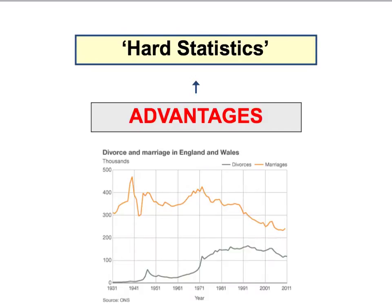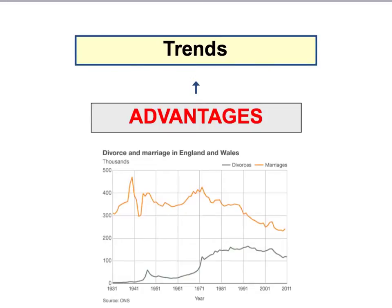Many examples of official statistics are what we call hard statistics — statistics that are unusually both reliable and valid. In other words, they accurately measure what they're supposed to (that's validity), and if somebody checks the data, they will get the same results (that's reliability). Statistics like marriage rates, birth rates, or divorce rates are examples of hard statistics that accurately measure virtually all cases. Another advantage is that government statistics are conducted on a regular basis, which allows for comparisons over time and the identification of important social trends.